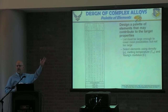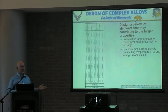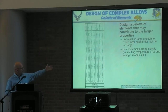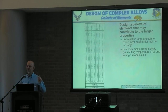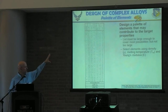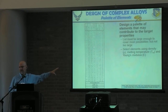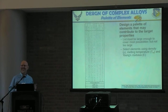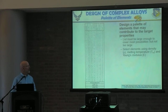We took the periodic table and threw away anything that doesn't look like a metal — if it was gaseous or liquid at room temperature, radioactive, or toxic, we threw it out. You end up with a list of about 43 elements. The list is still too big — how many ways can you choose five elements from 43? Over a million. And if you ask how many ways you can take five, six, or seven elements, it's 10 to the 13th. So we do have to simplify this somehow.